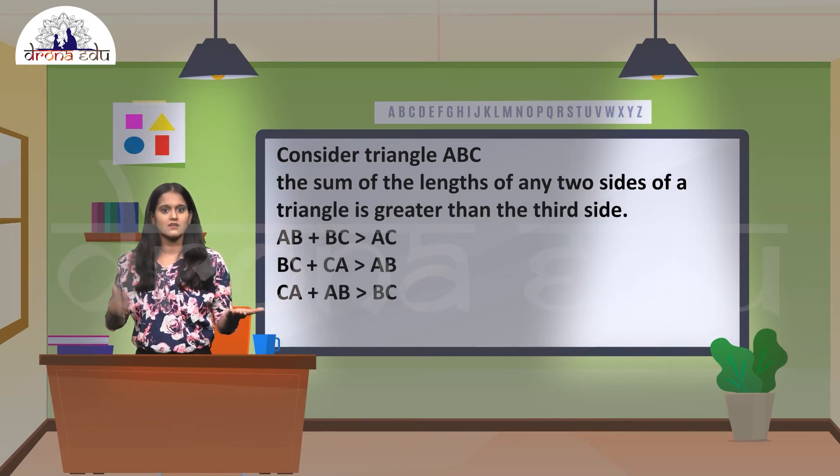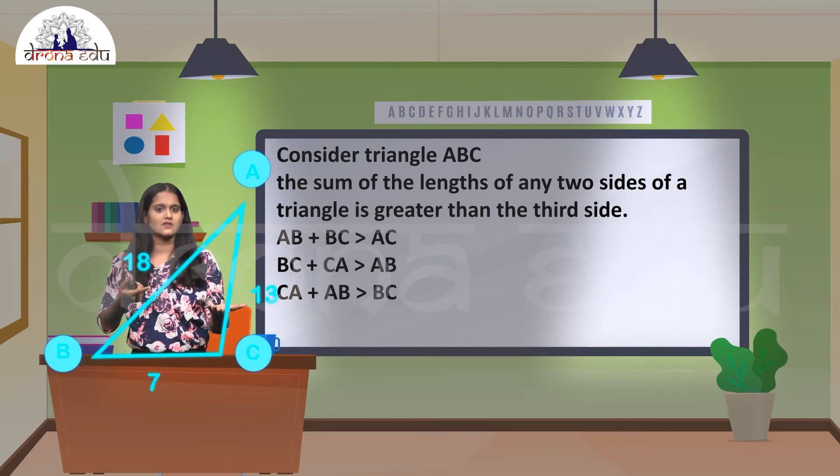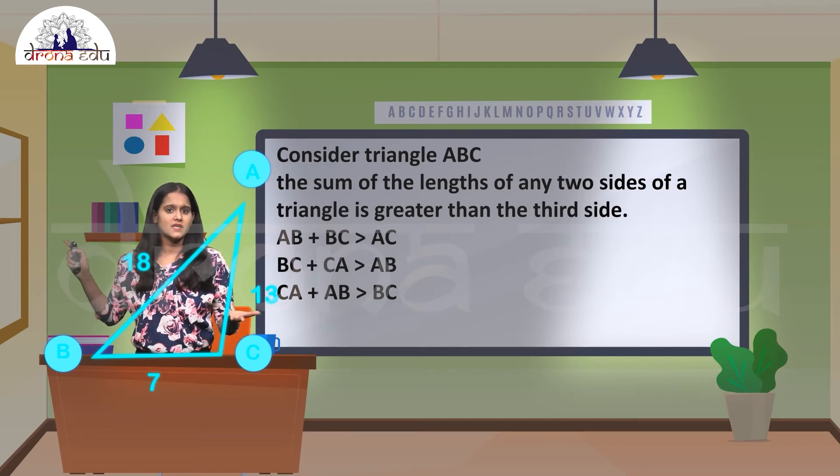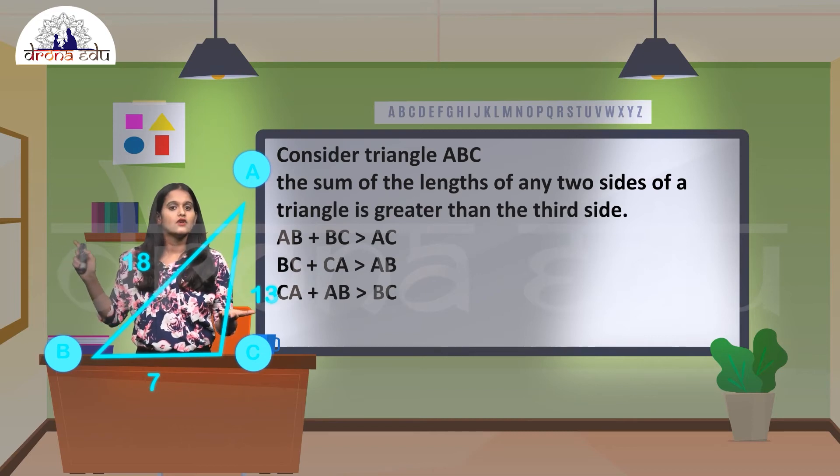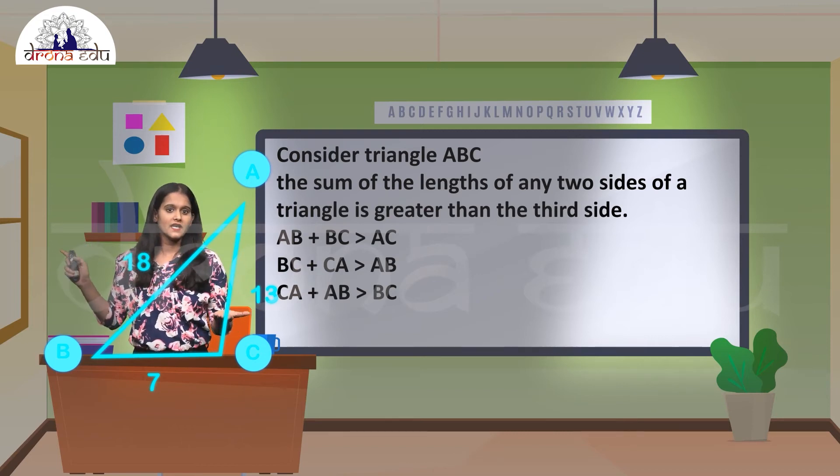So let's solve that. If I take lengths like this, the first one was AB + BC > AC, right? Just substitute the values. So we have 18 + 7, which is 25. If you see the third side, it is 13. So I can conclude that 25 is greater than 13.